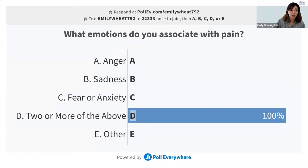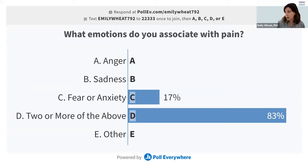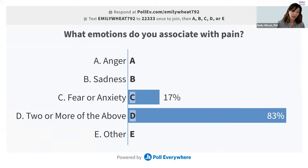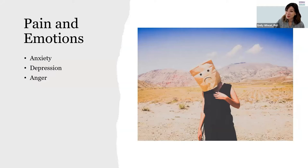What emotions do you associate with pain? The responses from this group show mostly anger, sadness, fear and anxiety — two or more of the above. You are right in line with what the research says about the emotions we experience when it comes to pain.